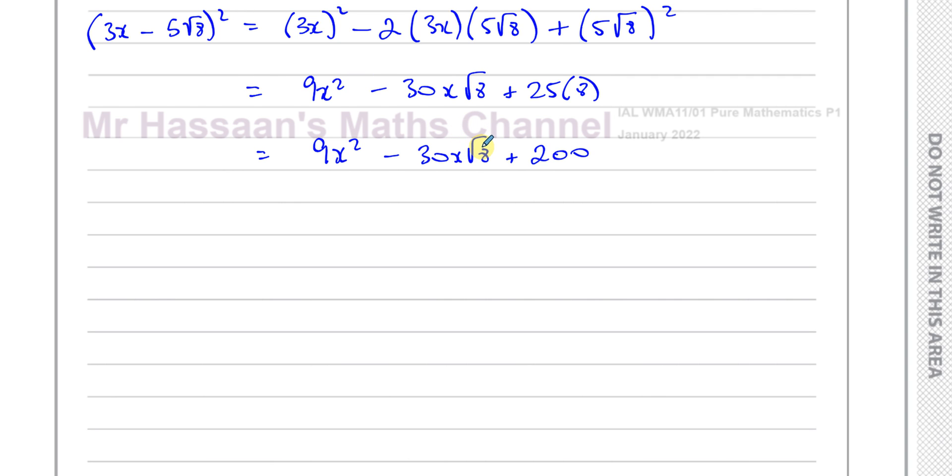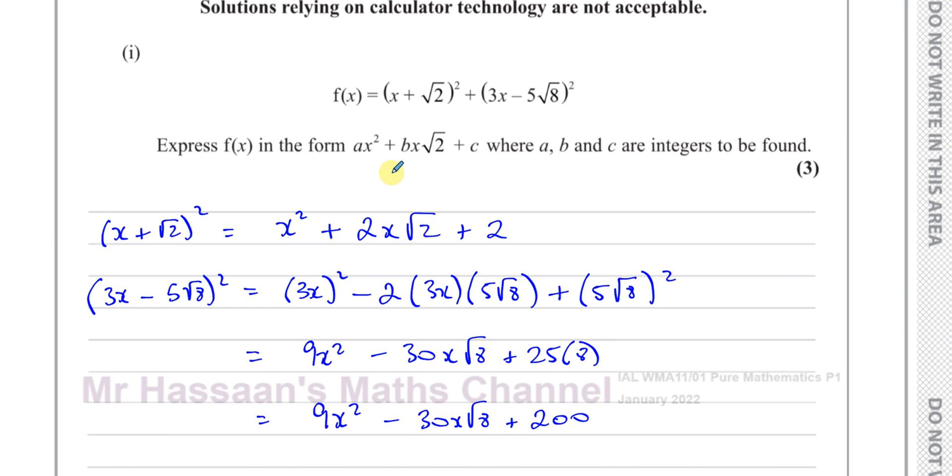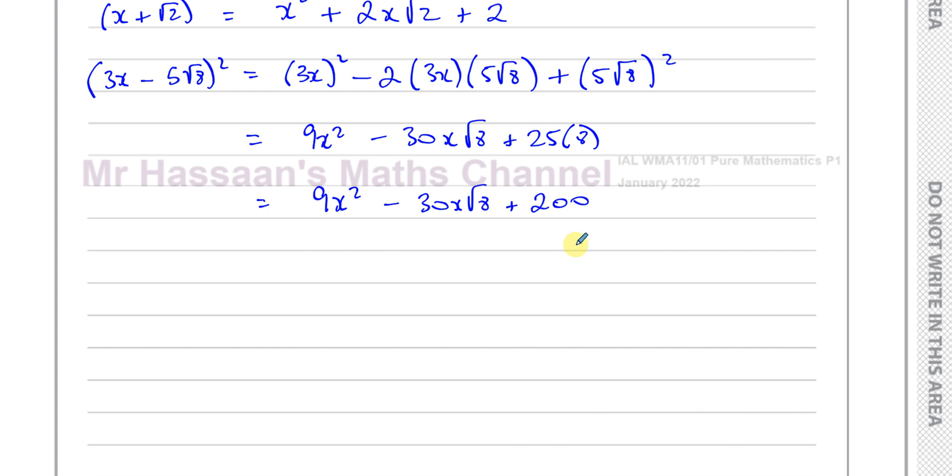I know √8 is the same as √4 times √2, which is 2√2. So I can replace this √8 with 2√2. So this is going to actually become 9x² minus 30 times 2, which is 60x times √2 plus 200. Now I can add them together.